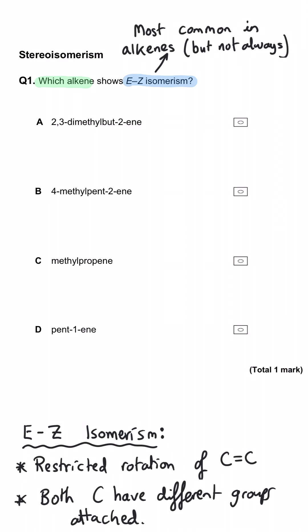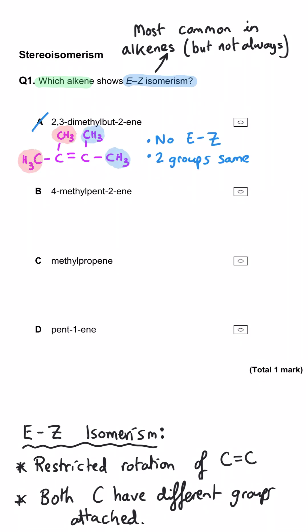Starting with bute-2-ene: we draw the carbon skeleton chain of four. The 2 means the double bond is on the second carbon atom. 2,3-dimethyl means there's a methyl group on carbon 2 and carbon 3, then we fill in the rest with hydrogens. The carbon atoms that have the double bond each have two methyl groups, so this will not show EZ isomerism.